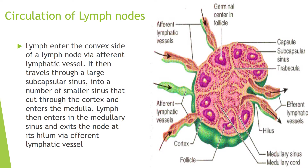Lymph enters the convex side of a lymph node via the afferent lymphatic vessel. It then travels through a large subcapsular sinus into a number of small sinuses that cut through the cortex and enter the medulla. Lymph then enters the medullary sinus and exits the node at its hilum via the efferent lymphatic vessel.